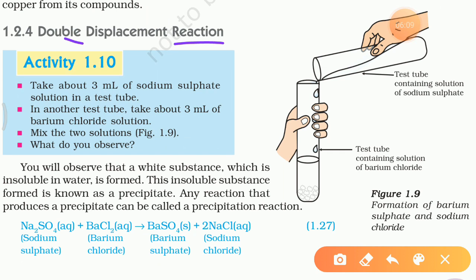Take about 3 ml of sodium sulphate in a test tube, and in another test tube take about 3 ml of barium chloride. So one test tube contains sodium sulphate and another test tube contains barium chloride. Then mix the two solutions. What we will observe is that a white substance which is insoluble in water is formed. This insoluble substance formed is known as a precipitate. Any reaction that produces a precipitate can be called a precipitation reaction.